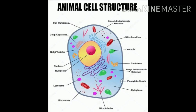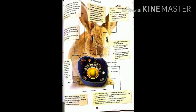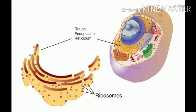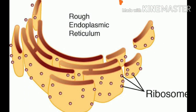Continuing with the cell organelles, next is ribosomes. Ribosomes are also called the protein factory of the cell because they prepare protein. Ribosomes are round structures that remain scattered in the cytoplasm of the cell, or they may remain attached to another organelle called endoplasmic reticulum.